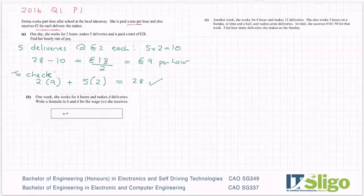Part B: One week she works for H hours and makes D deliveries. Write a formula in H and D for the wages she receives.